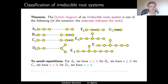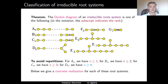To avoid repetitions in these diagrams, for the serial diagrams we assume: for An the parameter n is a positive integer; for Bn, n is a positive integer at least two; for Cn, n is a positive integer at least three; and for Dn, n is a positive integer at least four. The aim of today's lecture is to give a concrete realization for each of these root systems, in particular showing that they all exist. This will complete the classification of all irreducible root systems — they are really in bijection with these Dynkin diagrams.